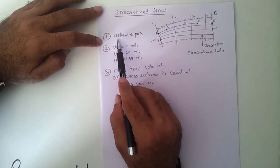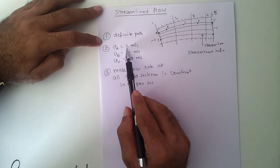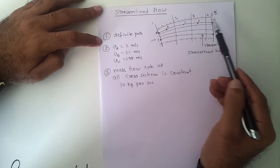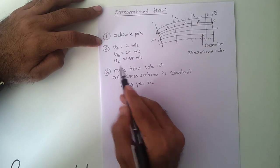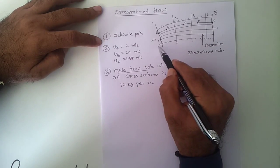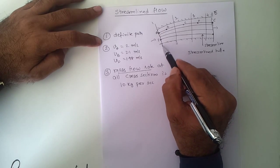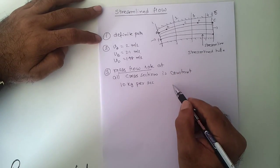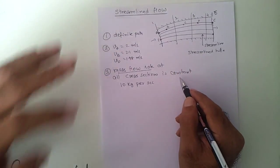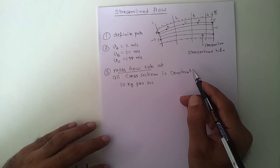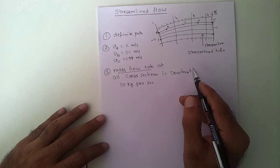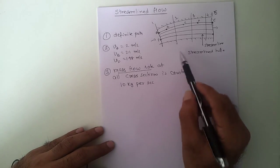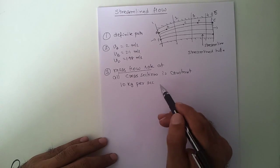These are the three features of streamline flow: all particles follow a definite path; the velocity at each and every point is fixed, even though values at different locations may differ; and the mass flow rate is constant — the mass entering or leaving a cross section per unit time is fixed. All discussions in this topic on motion in fluids will assume streamline flow, so it is very important to have a good understanding of what streamline flow is.